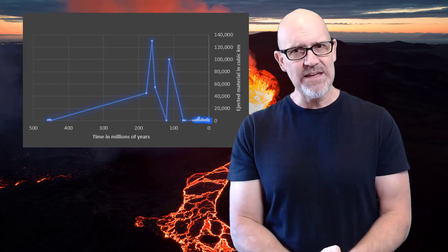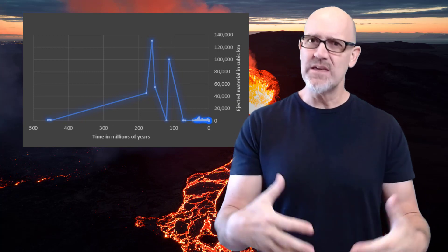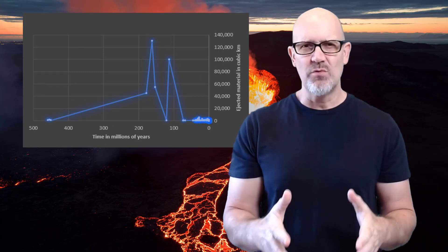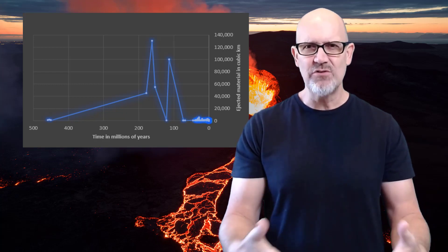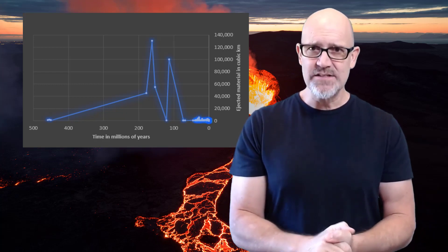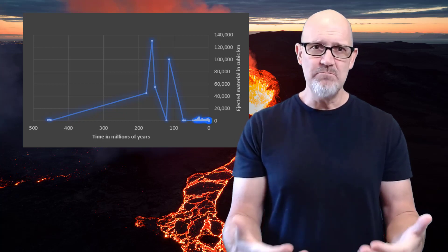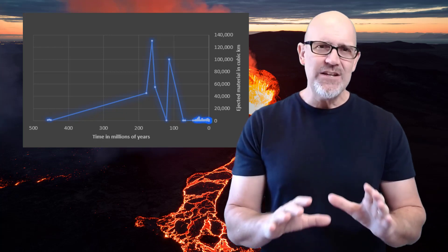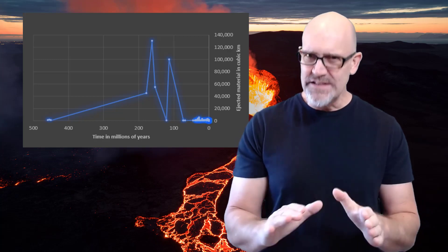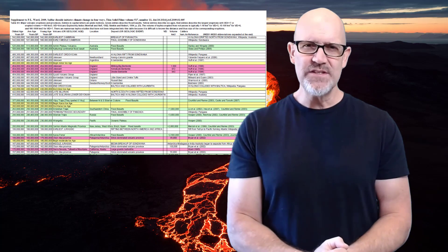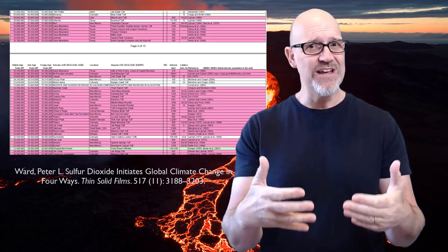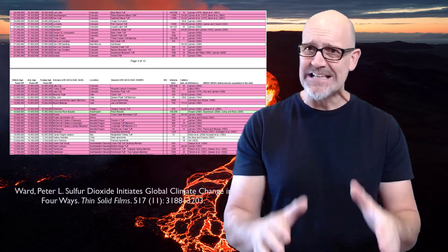Here is a graph of volcanic activity from the Cambrian all the way to the present. The y-axis represents the volume of material ejected from any single eruption, and the x-axis represents time in millions of years. In total, there are close to about 200 data points on this graph, all of which come from this exhaustive datasheet published by P. L. Ward in 2009, which is easily accessible online.